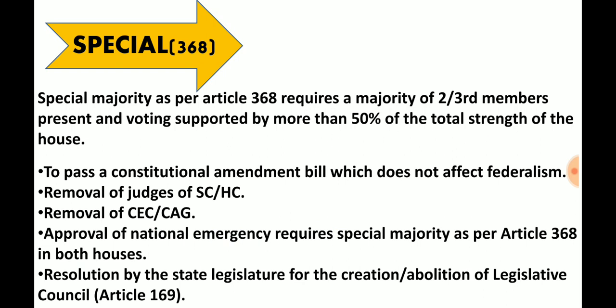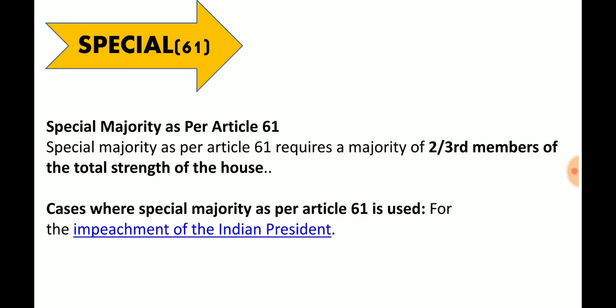To summarize: absolute majority means more than 50% of the total strength. If more than 50% of the people present and voting is achieved, that becomes simple majority. Watch this video 2-3 times to make the concept fully clear, as these questions appear repeatedly in exams. Thank you.